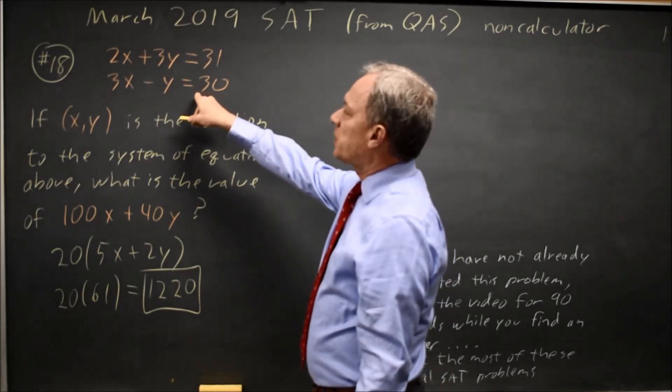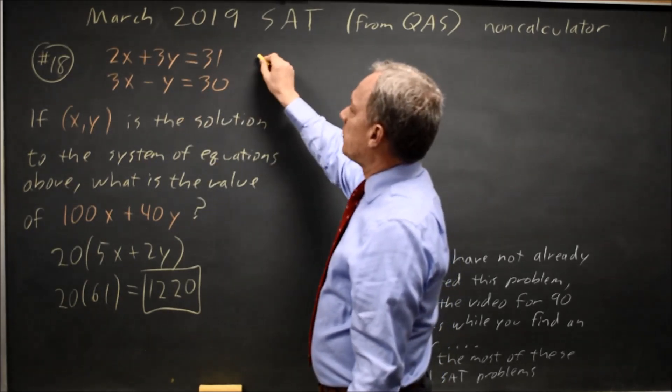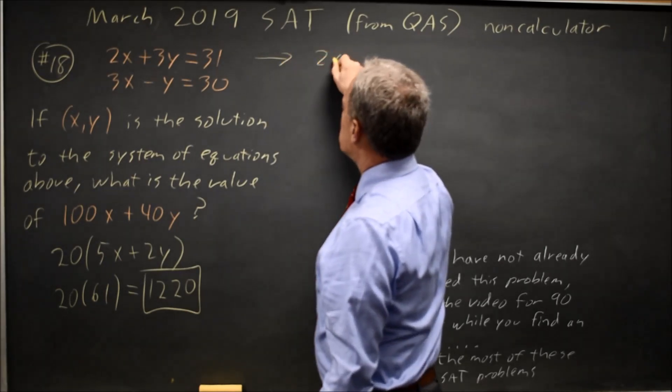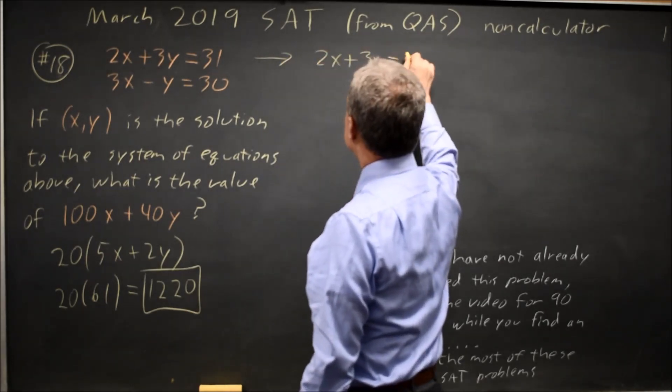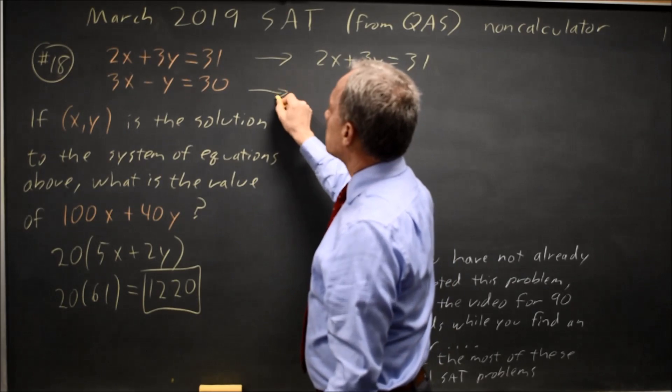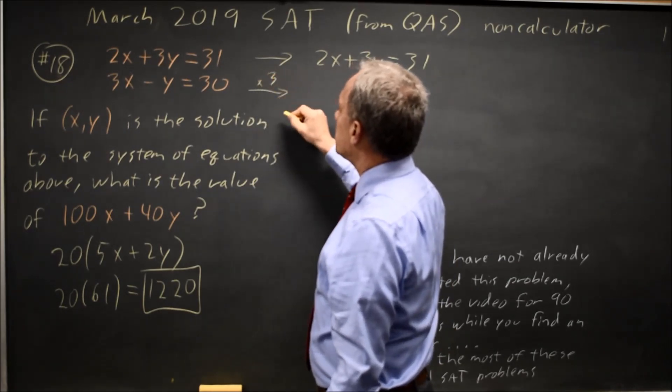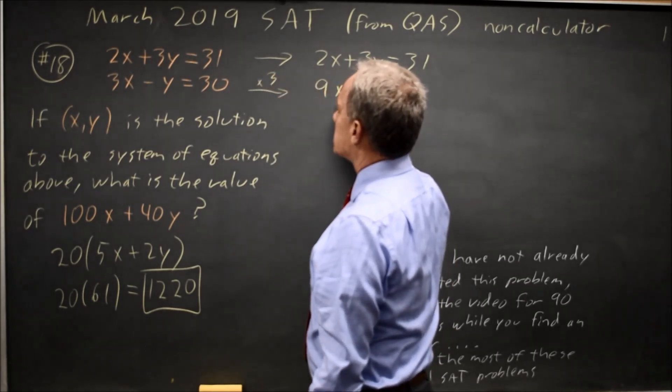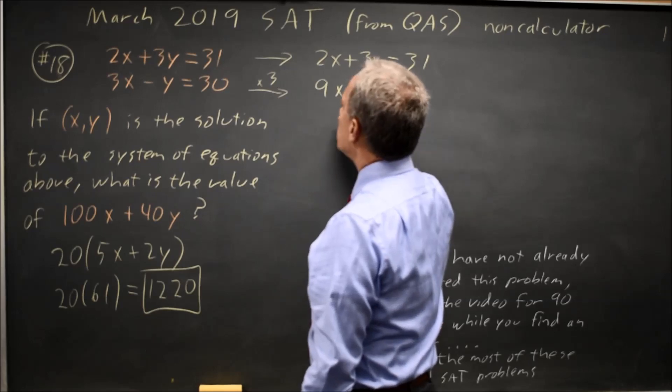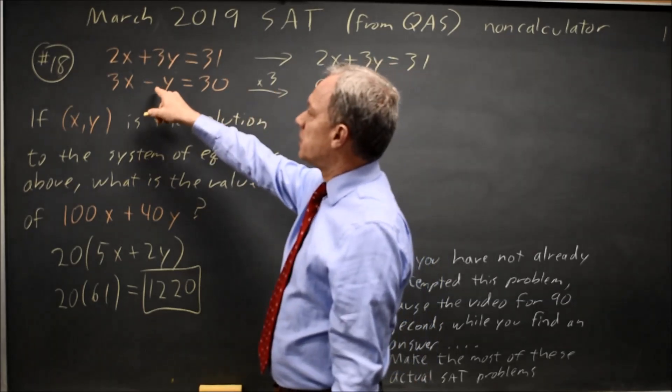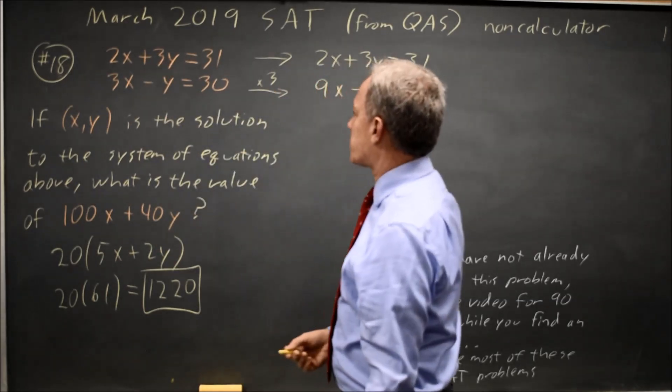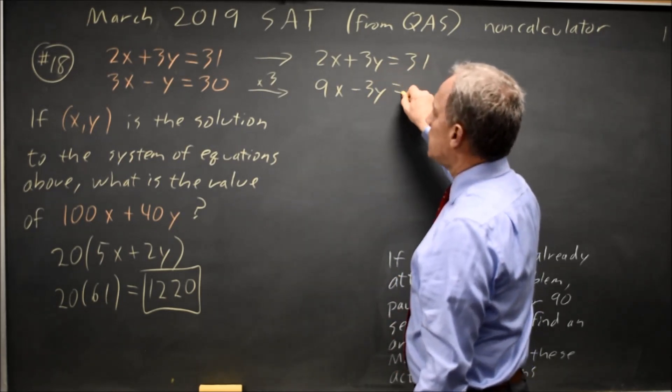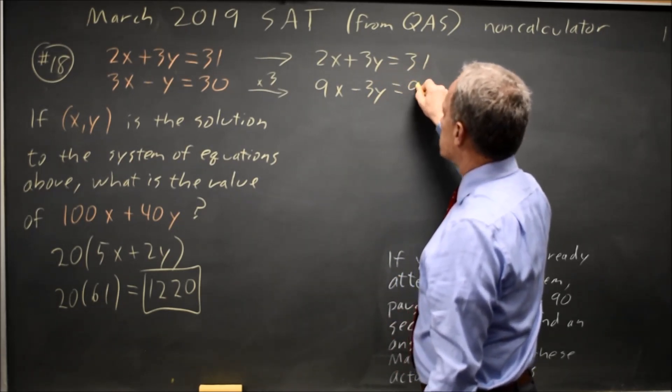One option I have here is linear combination. If I keep my first equation, 2X plus 3Y equals 31, and I multiply my second equation times 3, that would give me 9X minus 3Y. I choose times 3 because negative 3Y, if I add it to positive 3Y, it gives me 0Y.